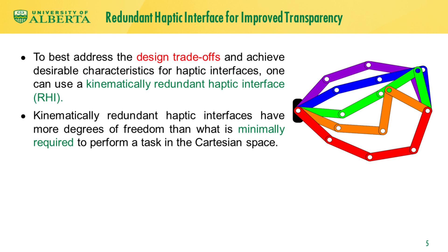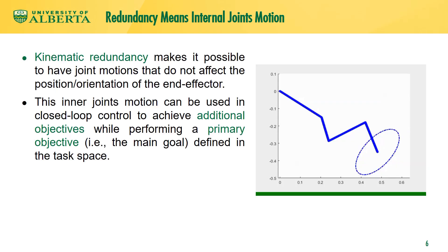To best address the design trade-offs and achieve desirable characteristics for haptic interfaces, one can use a kinematically redundant haptic interface. Kinematically redundant haptic interfaces have more degrees of freedom than what is minimally required to perform a task in the Cartesian space. Kinematic redundancy makes it possible to have joint motions that do not affect the position or orientation of the end effector. This inner-joint motion can be used in control to achieve multiple objectives while performing a primary objective in task space.